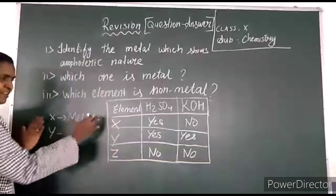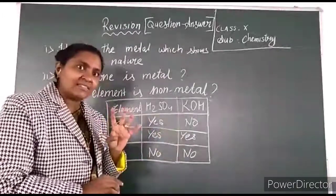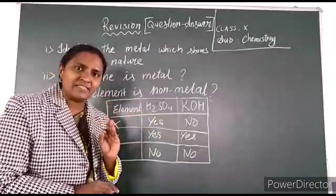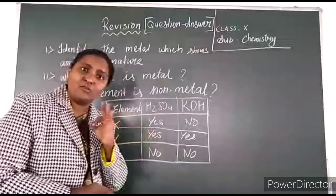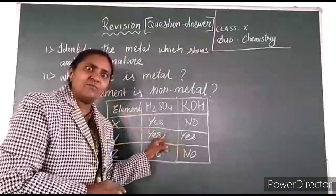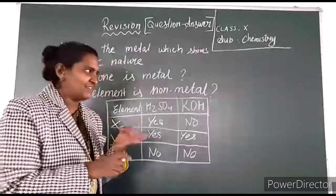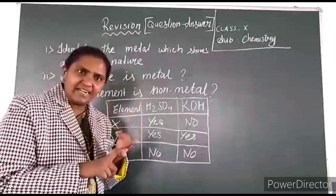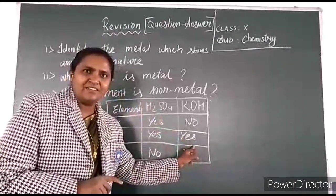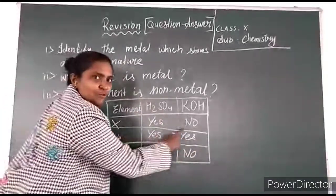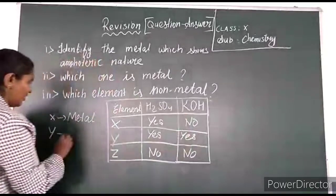What about Y? Y reacts with acid as well as base. You know that all metals react with acid, but very few metals — like aluminium, lead, and zinc — react with the base as well. These three metals react with acid as well as base. If a metal reacts with both acid and base, then it is an amphoteric metal. So Y shows amphoteric nature.